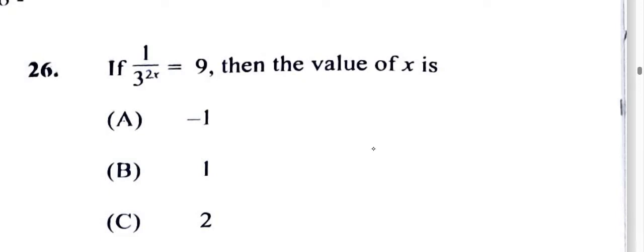All right, so now let's look at this question. If 1 over 3 to the power of 2x is equal to 9, then find the value of x.